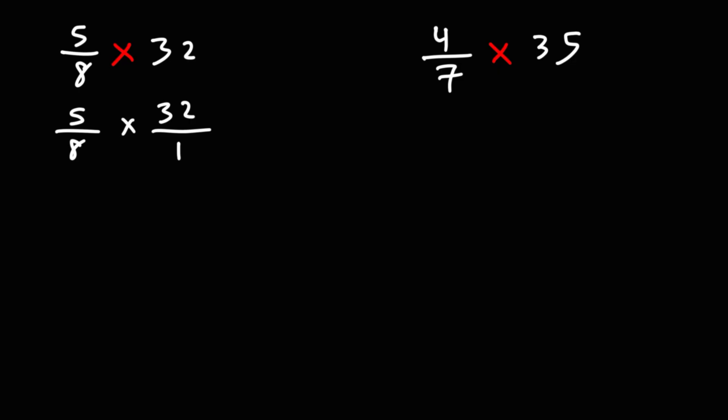Now 5 times 32 is a big number, so before we multiply across, we want to convert 32 into smaller numbers. 32 is 8 times 4. It's also 2 times 16, but I chose 8 times 4 because the 8s can cancel. So now we can multiply across. We have 5 times 4, which is 20. 20 over 1 is the same as 20. So the final answer will be 20.